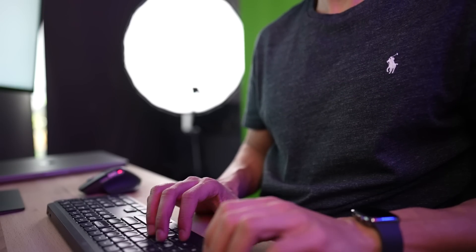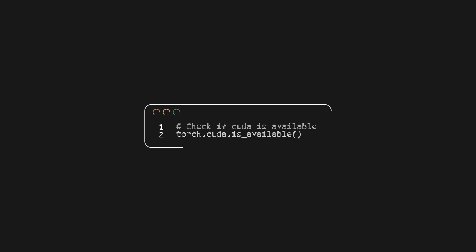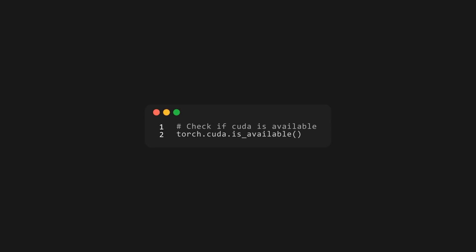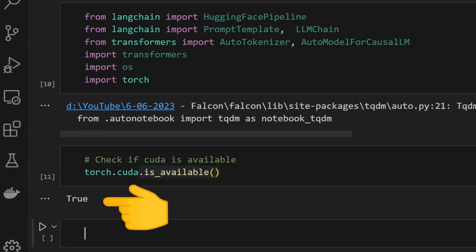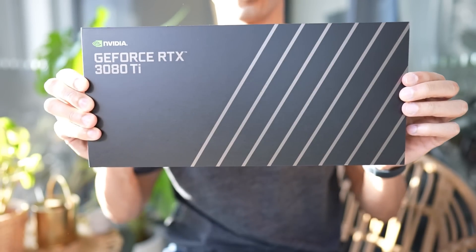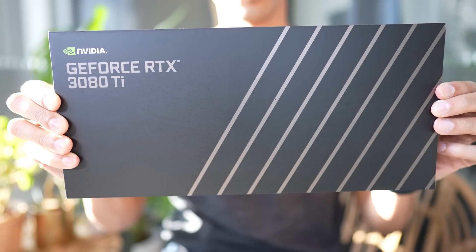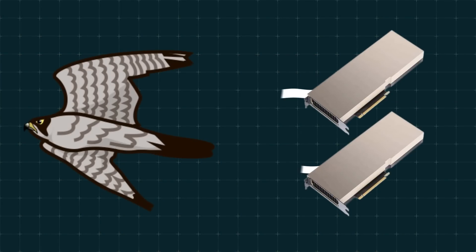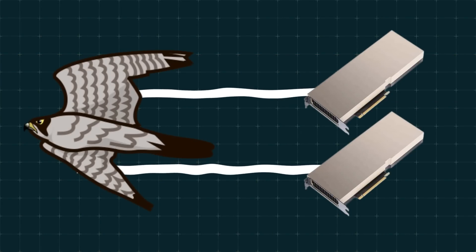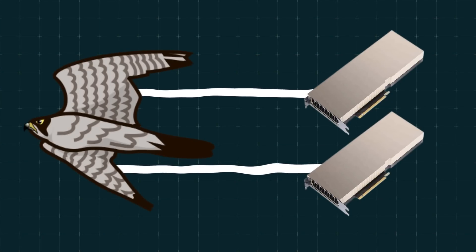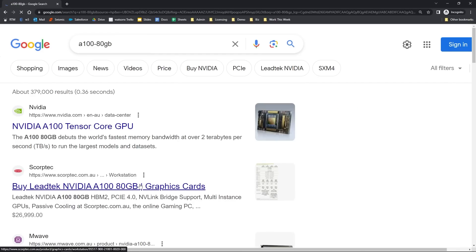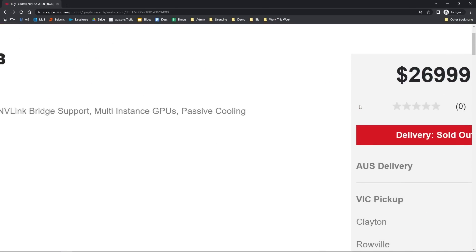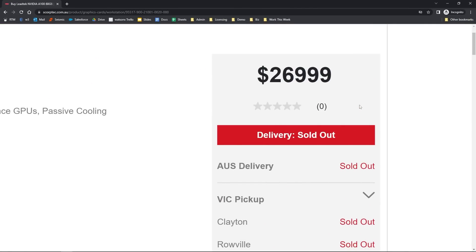To test if we've got PyTorch successfully compiled for a GPU, we can run torch.cuda.is_available(). If it returns true, you're golden. This brings me to the GPUs though — in order to get this bad boy running, I had to use some beefy hardware, namely two A100 80GB GPUs, which cost a casual $27,000 each.